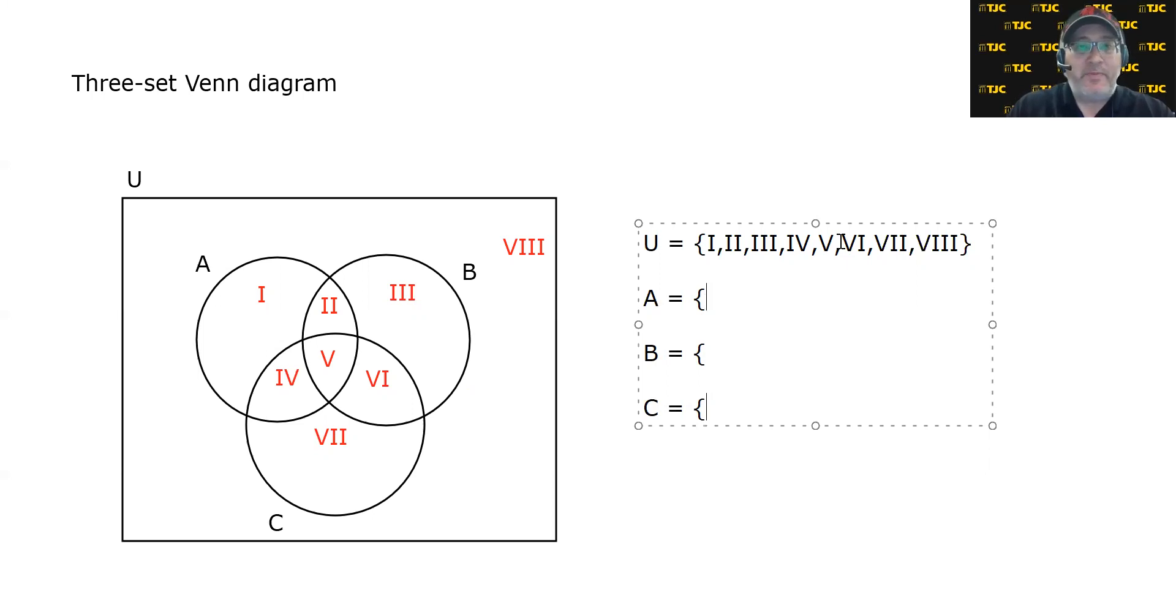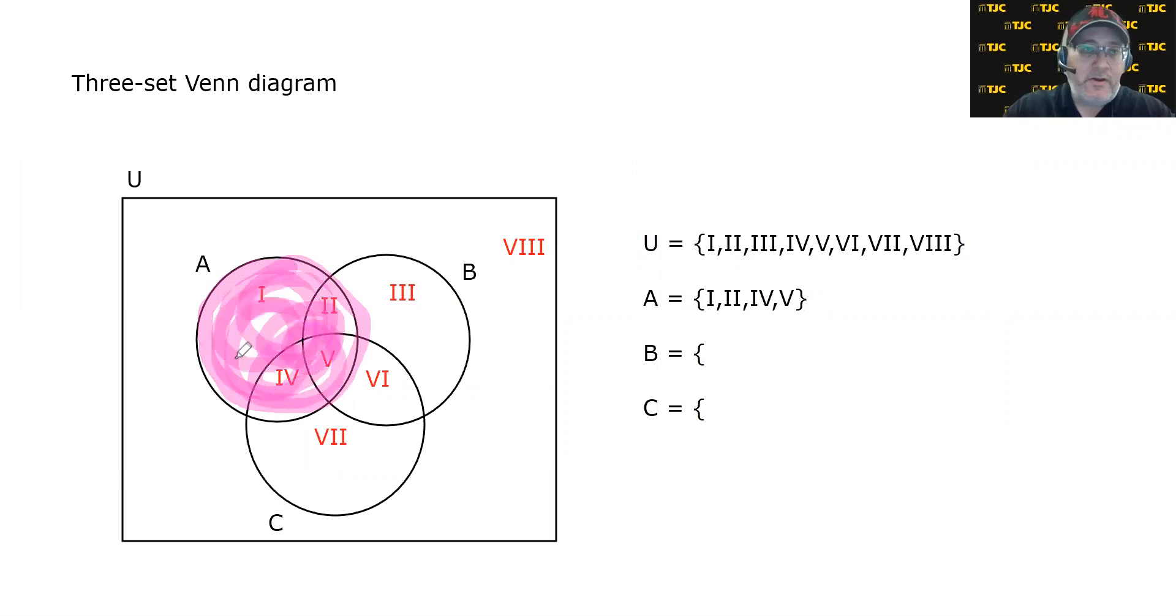Set A is made up in order of regions 1, 2, 4, and 5. If you were to shade in circle A, not the best shading job I've ever done, but if you were to shade in circle A, then it's made up of regions 1, 2, 4, and 5.